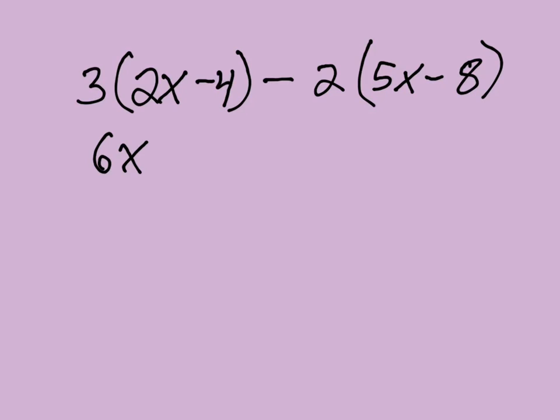3 times negative 4 is minus 12 or negative 12. And now we have negative 2 times 5x is negative 10x. And negative 2 times negative 8 is plus 16.